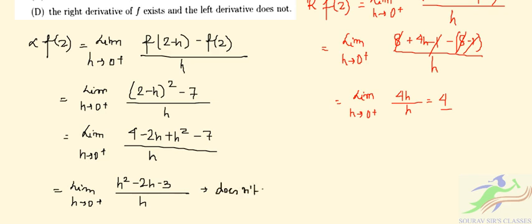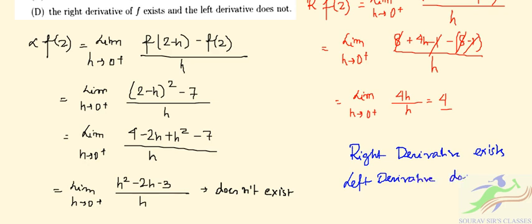So in the inference, we can say that the right derivative exists and the left derivative doesn't exist.